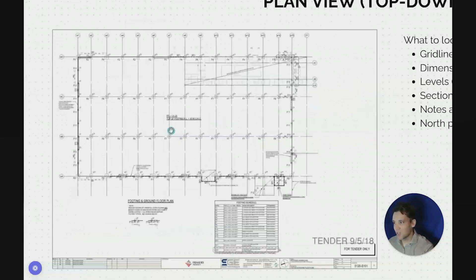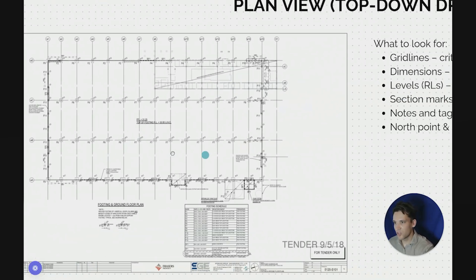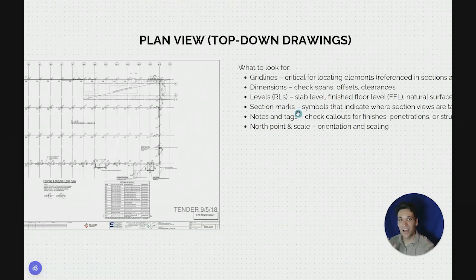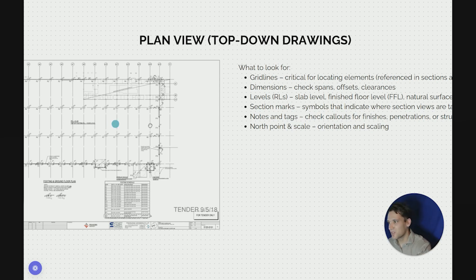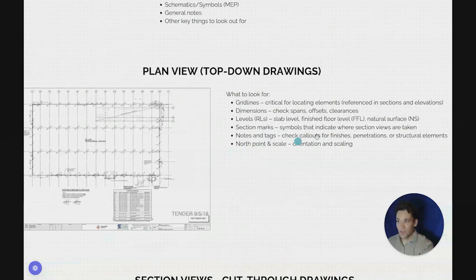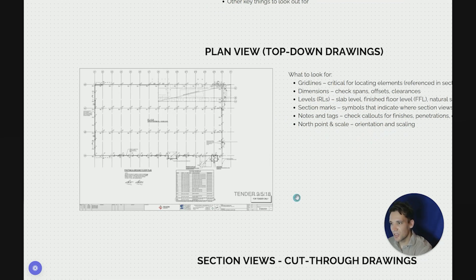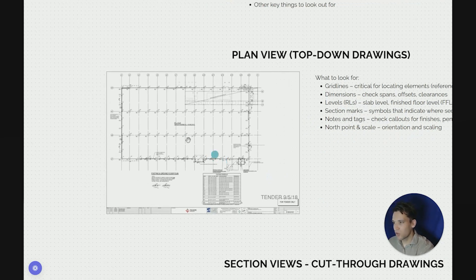We've also got dimensions, such as the overall width of the building and offsets. I also want to pay attention to the RL — the reduced level — which you can think of as height. Typically it's a measurement in meters referencing meters above sea level. For example, you can have a slab level RL, a finished floor level RL, and you might have multiple plan views with different RLs, or a natural surface level.